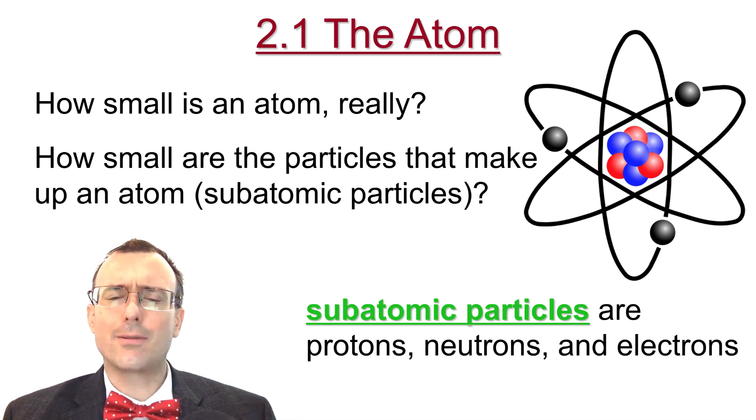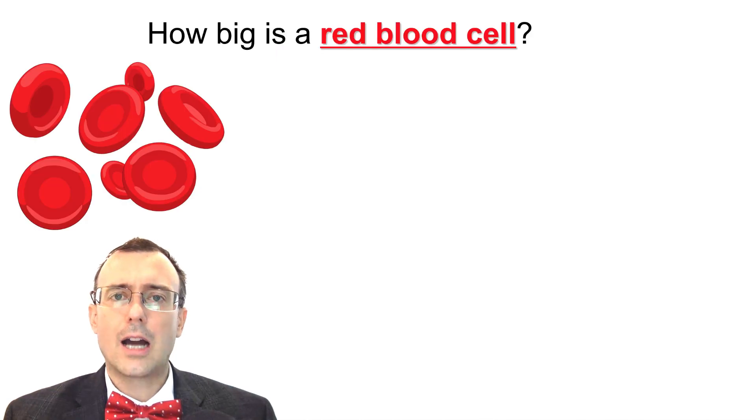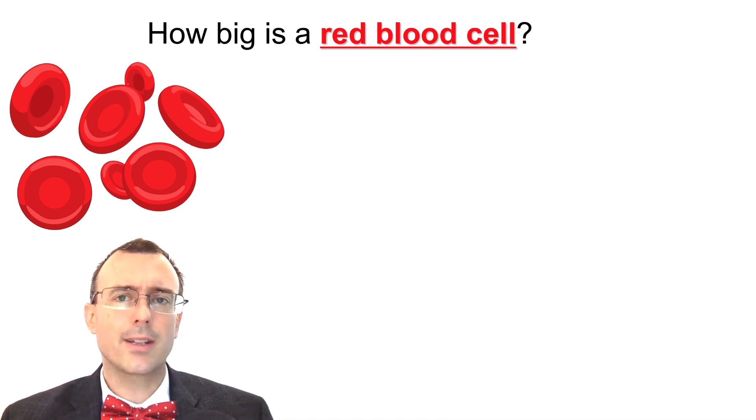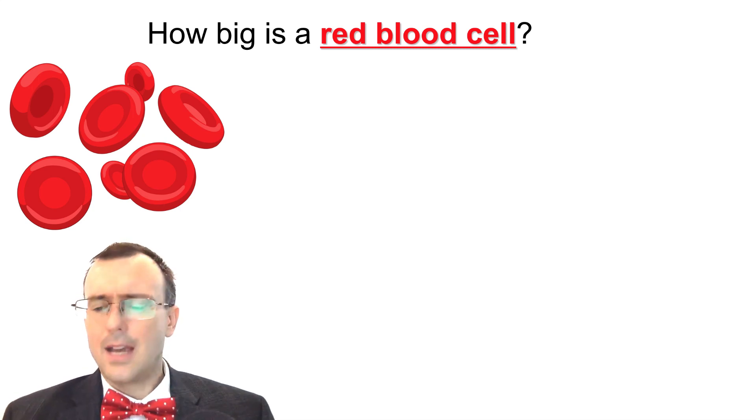Now, in order to understand really how small atoms and subatomic particles are, I'd like to start with something a little bit bigger—red blood cells. Red blood cells, we all have red blood cells. They're really small, you can't see them. Now, how big are they? And to understand this, I'd like to think of an analogy.